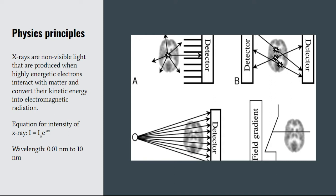The equation for the intensity of x-rays is: I, which is the intensity behind the object, equals I-initial — the initial intensity of the x-ray projector — times e to the power of negative AX. X is the length of the x-ray path through the object, and A is the attenuation coefficient of the material, which is basically how dense the material is, or how easily an x-ray can pass through it.